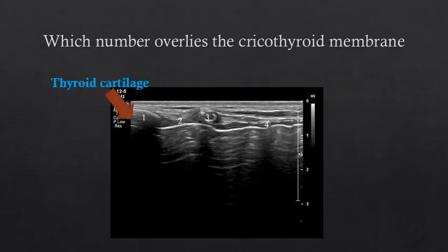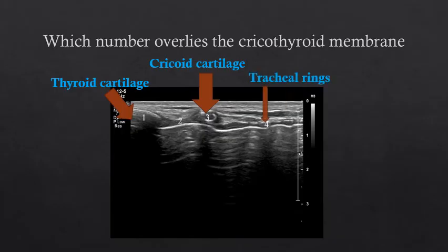To recap the sagittal laryngeal structures: thyroid cartilage, cricoid cartilage, tracheal rings, and cricothyroid membrane.